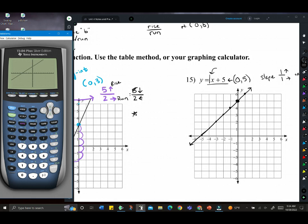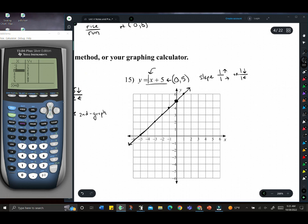Another thing you can do is, once you have it graphed, you can do second graph. Second is the blue button to graph, and that's going to give you a table of all the points. Just like before, when we had a table of values, you could write down some of those points and then connect them. So we have 0, 5, we knew about. We have negative 1 and 4, and we have 1 and 6. You could plot each of those points to get an idea.